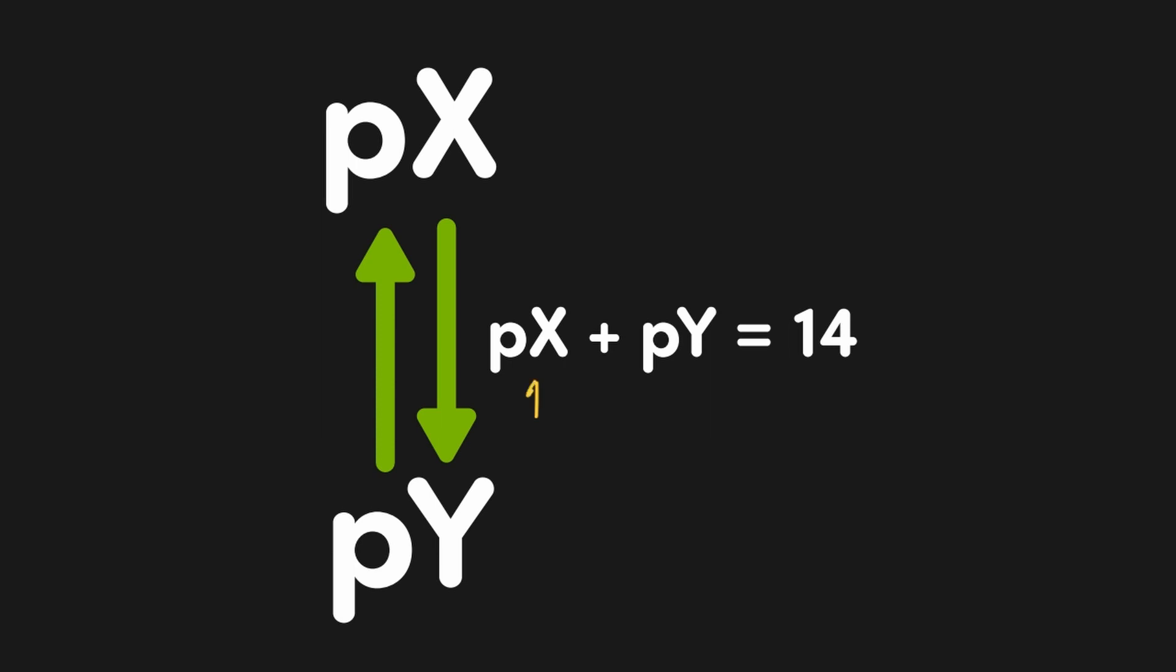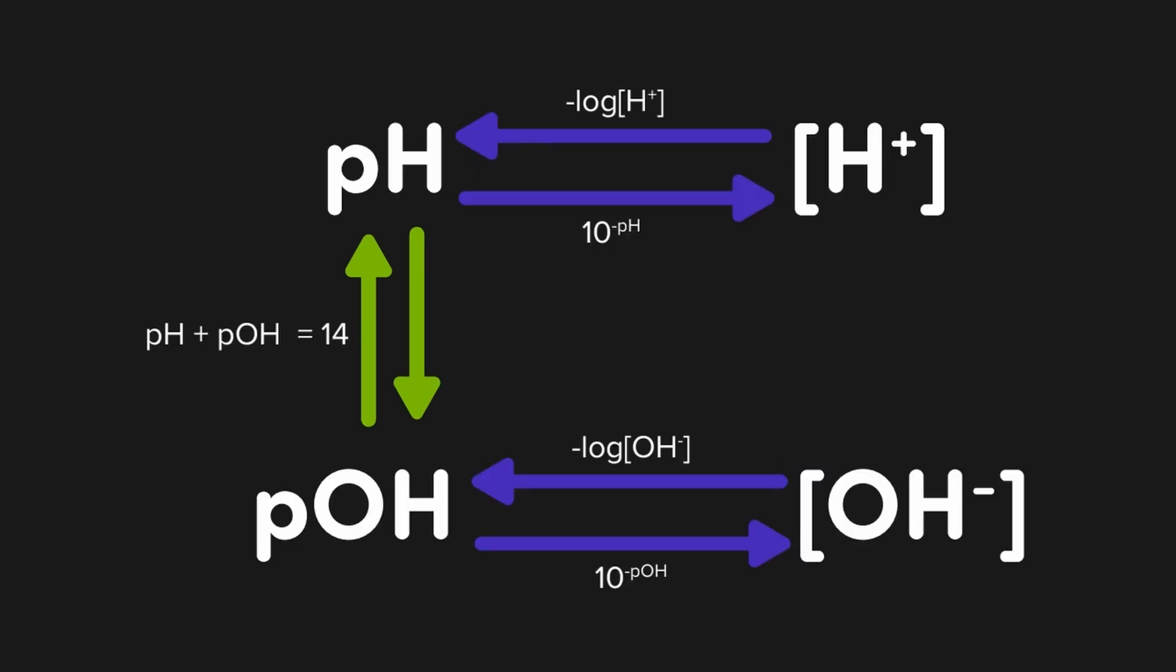For example, if pKa was 4, then pKb would have to be 10 in order for the two values to sum to 14. And the same relationship also carries over to pH and pOH.